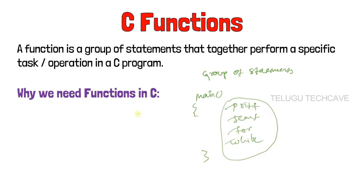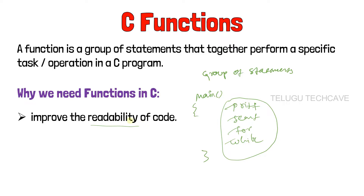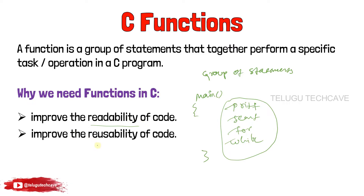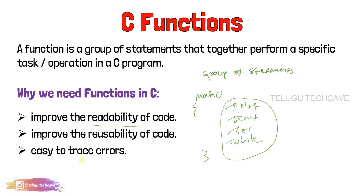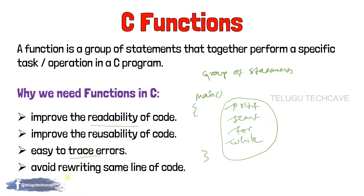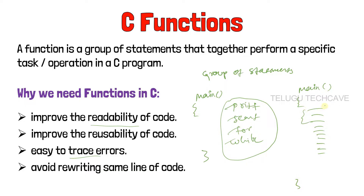Next, why do we need functions in C? We can use functions in any language. First, to improve the readability of code — we can easily read the code. And to improve the reusability of code — we can use this function in another program. Next, to use it to trace errors — we can easily find errors. Next, to avoid rewriting the same line of code. For example, if there are 100 lines of code, we can use just 10 lines of code by using functions.